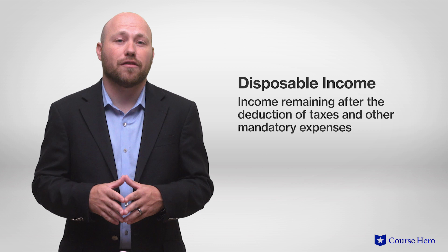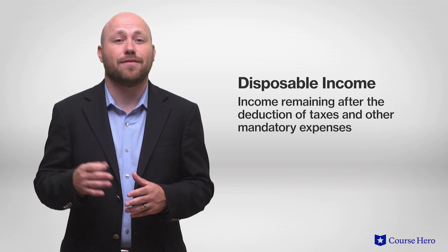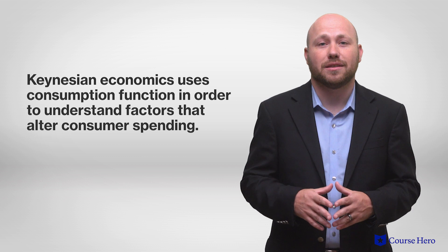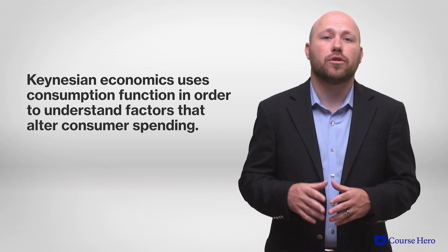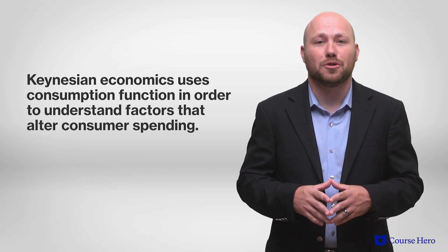Disposable income also includes government transfers, which households can save or spend. The consumption function is represented by an equation that models the factors that alter consumer spending. Keynesian economics uses this concept to understand the factors that alter consumer spending.